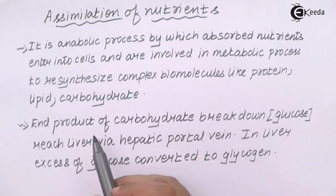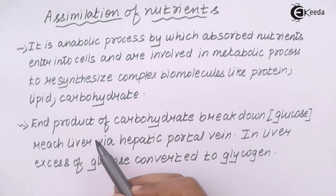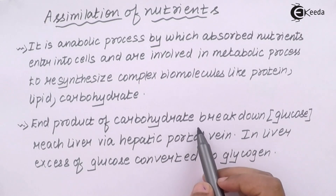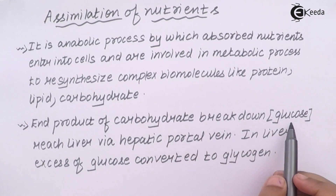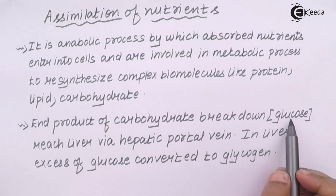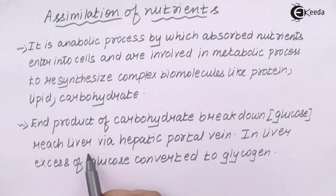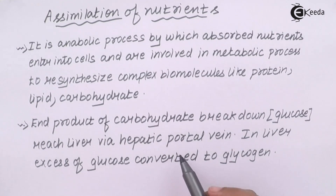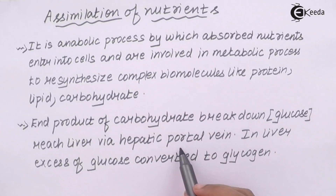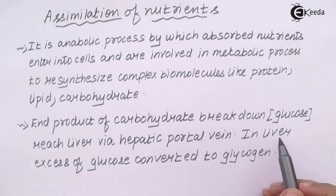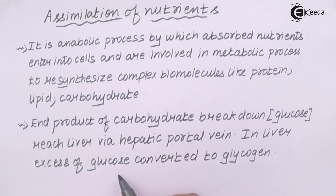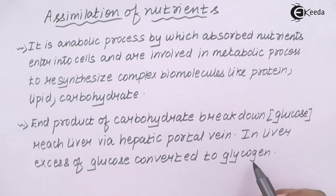The end product of carbohydrate breakdown is glucose, a simple sugar, which reaches the liver by the hepatic portal vein. Once it reaches there, excess glucose in the liver is converted into glycogen.